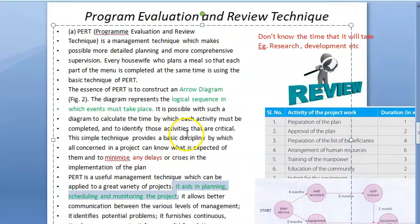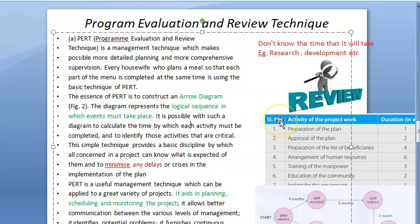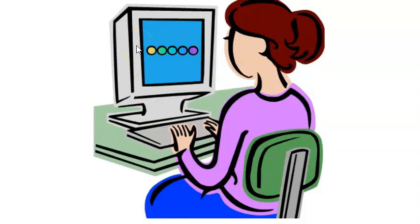The boundary between event and activity in PERT and CPM is not strictly rigid — both involve activities. The basic concept in PERT is that the time is not known; it is estimated.